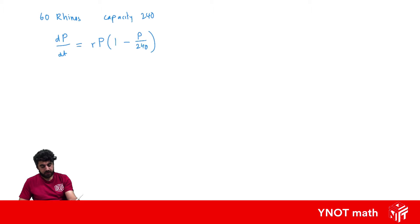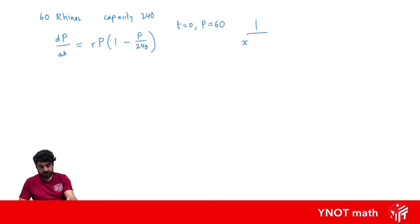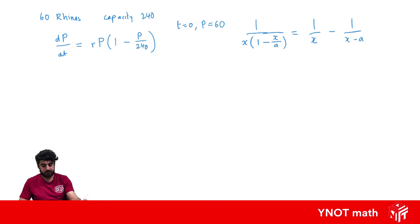We know initially the population is 60 rhinos, so when t equals 0, the population equals 60. We're also given that 1 over x times 1 minus x over a equals 1 over x minus 1 over x minus a, which might come in handy.